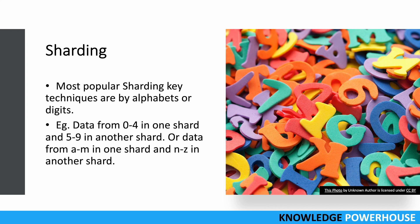How do you decide what kind of shard key to use? Normally we use a hash function. The most popular techniques use alphabets or digits — for example, data from 0 to 4 in one shard and 5 to 9 in another, or last names from A to M in one shard and N to Z in another. A good rule of thumb is to ensure shards are equally load balanced, meaning the sharding key should be created so that shards are of similar sizes and load is distributed evenly.